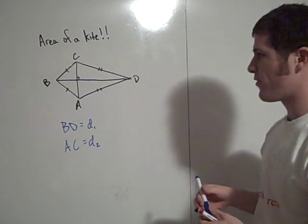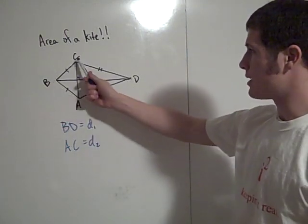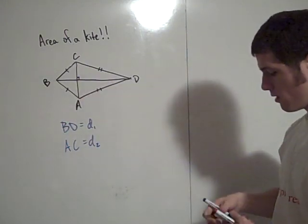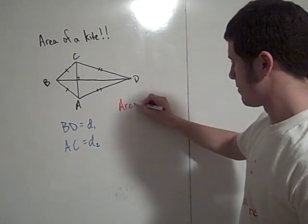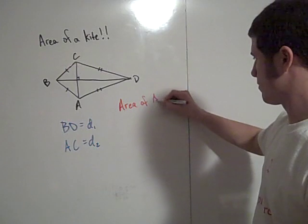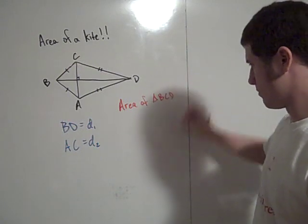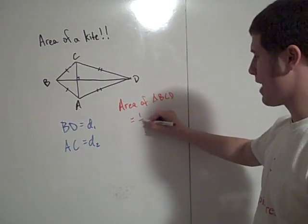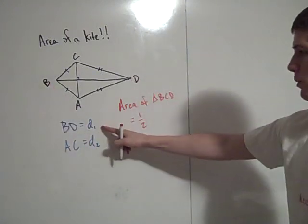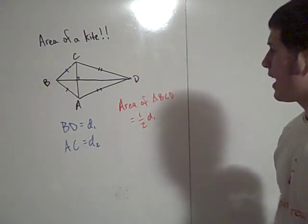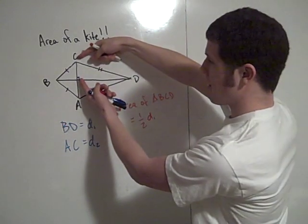So then let's find the area of triangle BCD. What does that equal? That's one half base times height. The base is BD, which is D1.